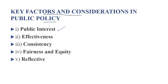दूसरा factor है effectiveness — जो policy बनाई जा रही है वो effective भी होनी चाहिए, सिर्फ कागज़ पर बनाकर नहीं छोड़ देनी। Policy इतनी effective होनी चाहिए कि जिस goal के लिए बनाई गई है उसे achieve कर सके। Next factor is consistency — public policy should be consistent with the goal, यानी policy should match the goals and not contradict them।